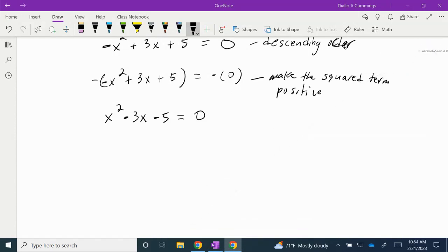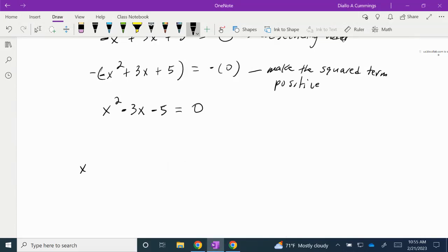Now we're going to use the quadratic formula. Using the quadratic formula, we have x = (-b ± √(b² - 4ac)) / 2a.